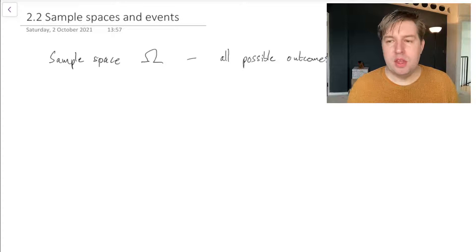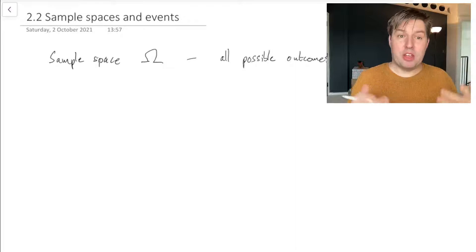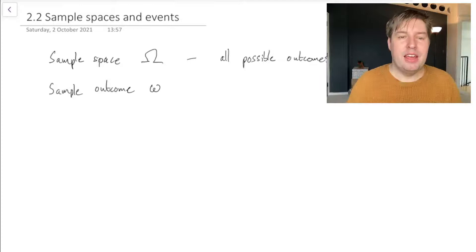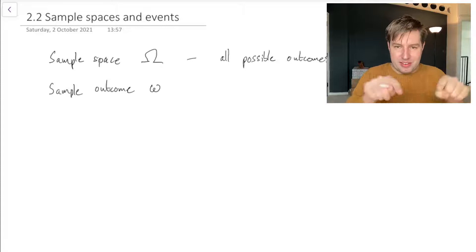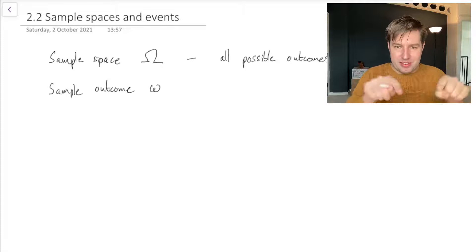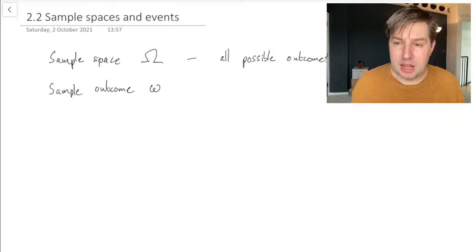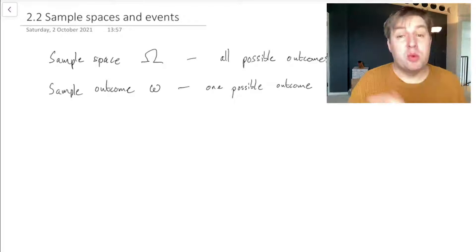Things that are inside this set are the possible outcomes themselves, and we normally call those sample outcomes. We normally give a sample outcome the lower case omega, which looks a little bit like a W but loopier. So the sample space is the capital Omega, and the sample outcome is the little loopy W, the little omega. A sample outcome is just one particular possible outcome. We don't always use the little omega — there are lots of different letters that are useful for different things.